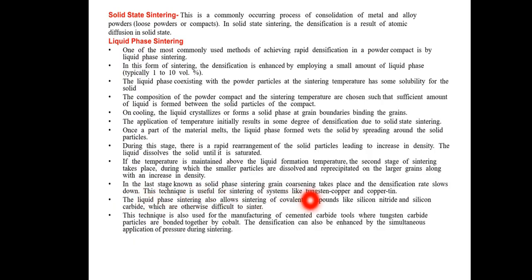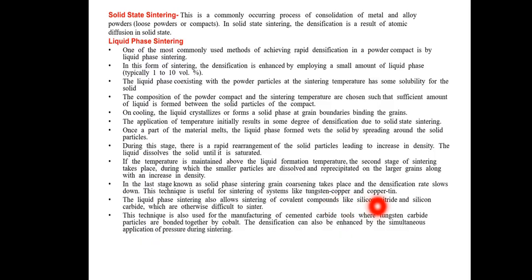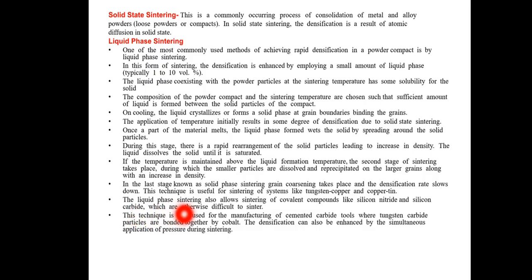In the last stage, known as solid phase sintering, grain coarsening takes place and the densification rate slows down. The technique is useful for sintering of systems like tungsten-copper and copper-tin. Liquid phase sintering also allows sintering of covalent compounds like silicon, silicon nitride, and silicon carbide, which are otherwise difficult to sinter.